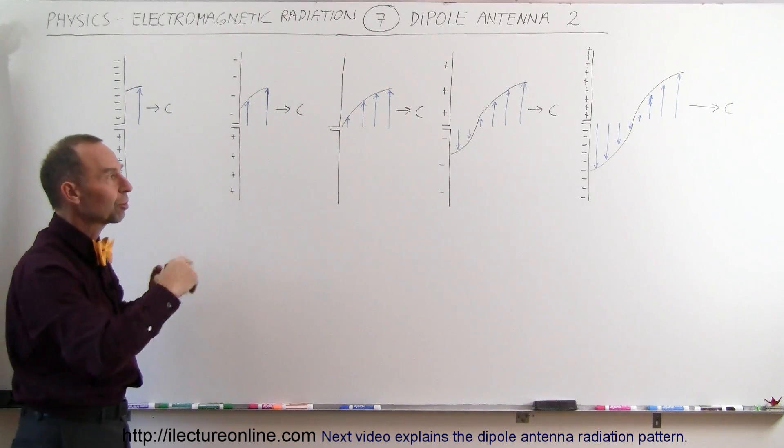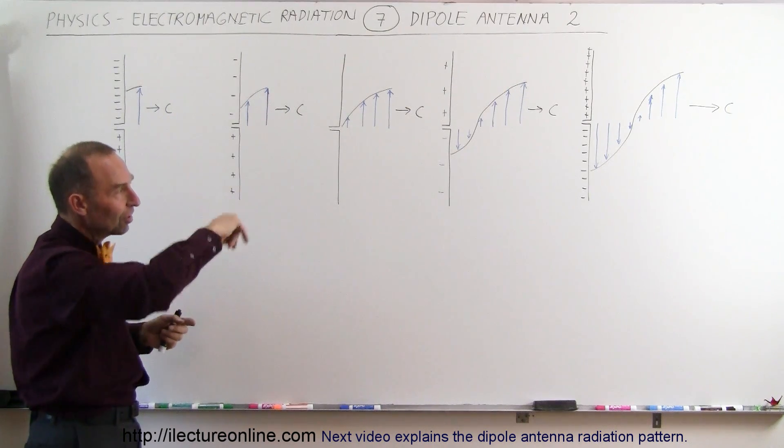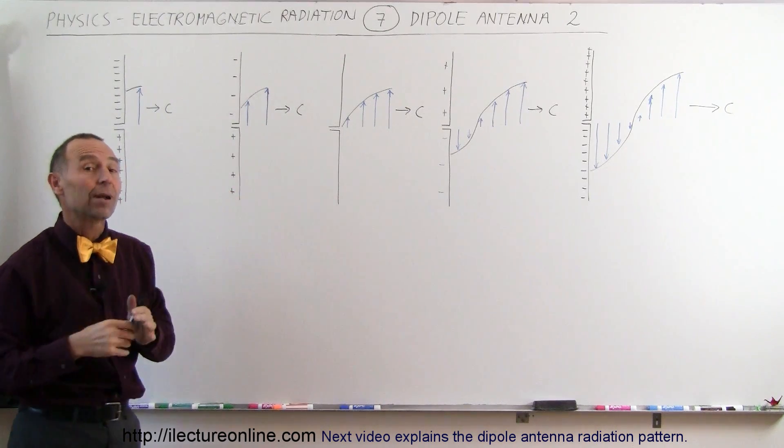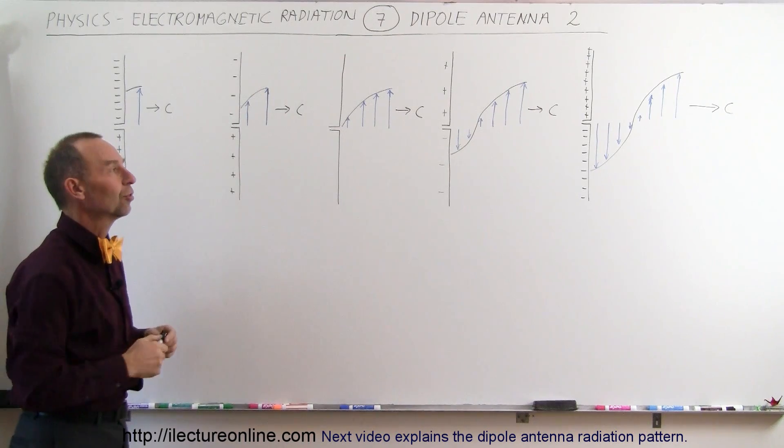Charge increase, they decrease, change polarity, back and forth like that. You can see how then a sine wave of electromagnetic radiation would then emanate out into space.